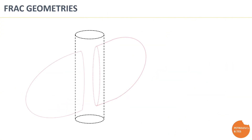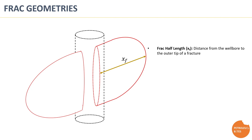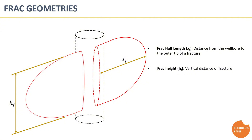The created frack has two main wings, and each wing has three main geometries. Firstly, frack half-length, which is the horizontal distance from the wellbore to the tip of the created fracture — it's a measure of fracture penetration in the reservoir. Secondly, frack height, which is the vertical length of the created frack from top to bottom. Finally, frack width, which is the opening width of the created frack — it's a very important geometry and has a direct relationship to fracture conductivity.